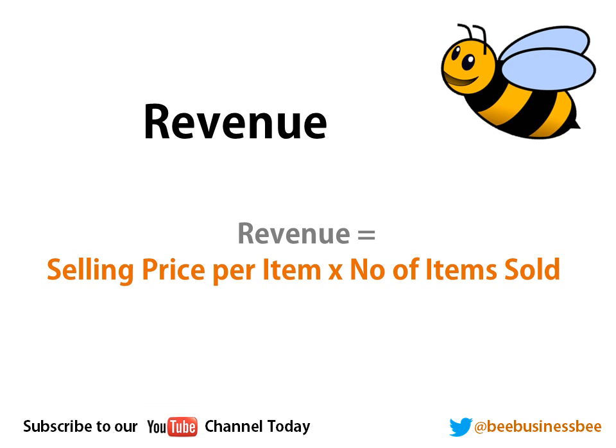The first formula we're going to look at is revenue. This is one of the most basic ones you should know. To calculate revenue, it's basically the selling price per item times the number of items that are sold.